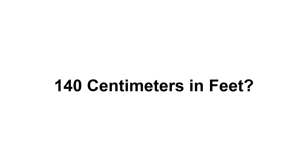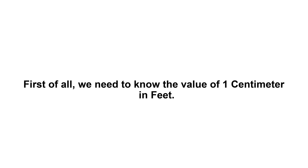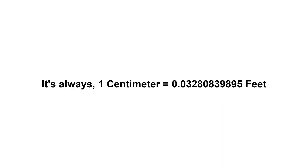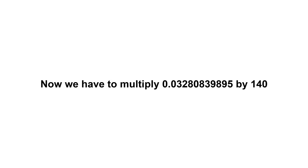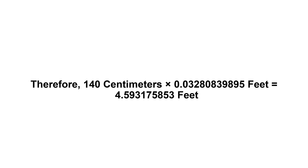140 centimeters in feet. First of all, we need to know the value of 1 centimeter in feet. 1 centimeter equals 0.03280839895 feet. Now we have to multiply 0.03280839895 by 140. Therefore, 140 centimeters times 0.03280839895 feet equals 4.593175853 feet.